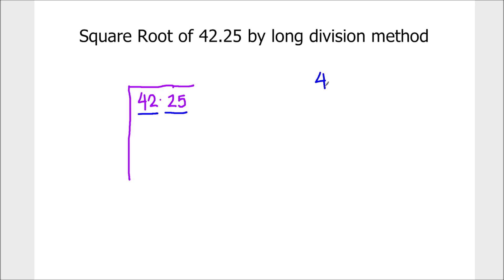If it would have been like 42.581, then we need to put one more zero to make the periods even, but here we do not need to do that.